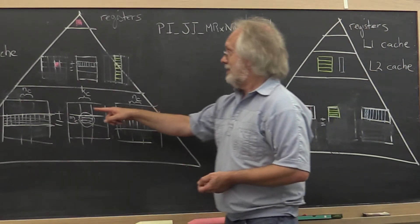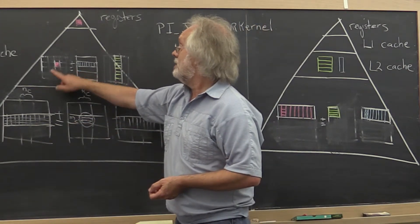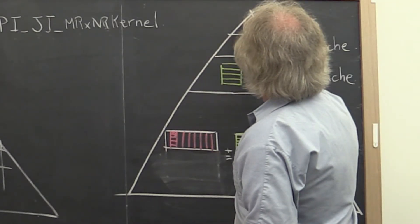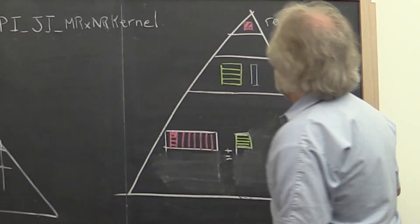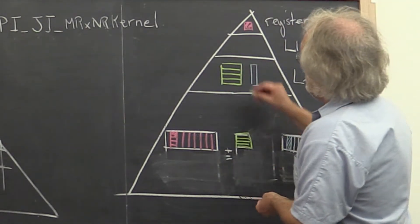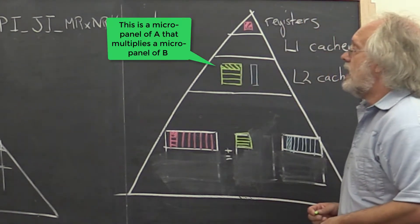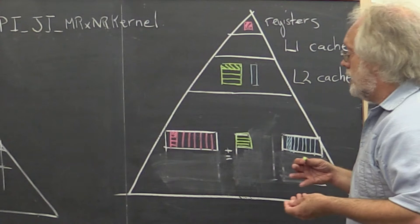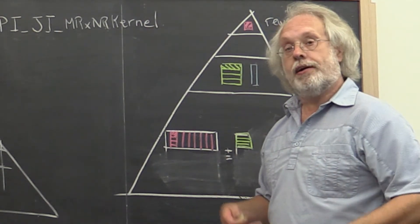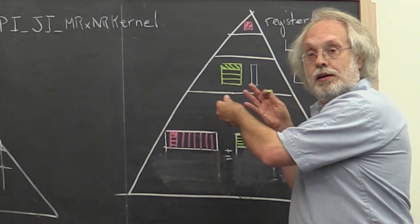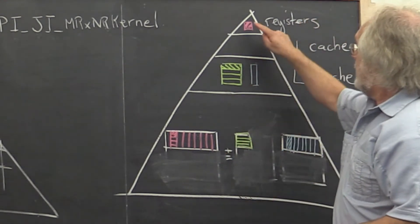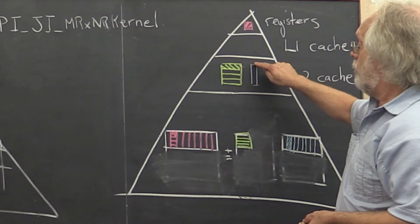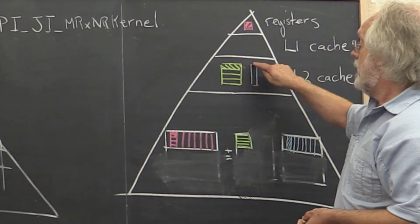Now what we reasoned was that the microtile of C really needs to be placed in the registers. So a typical microtile of C now ends up in the registers right there. And then what you end up doing is multiplying the corresponding microtile of A times the microtile of B. Now registers are inherently about placing data there that gets reused many times. That's why we placed the microtile of C in registers here, because it got reused over many rank one updates as we implemented our microkernel.